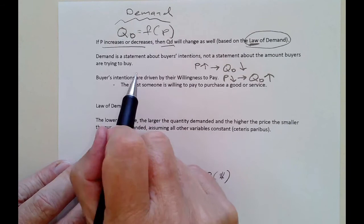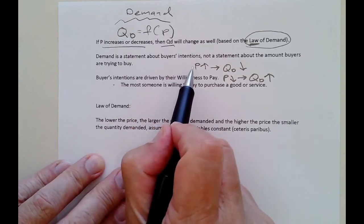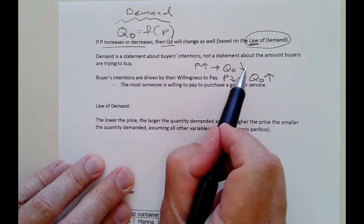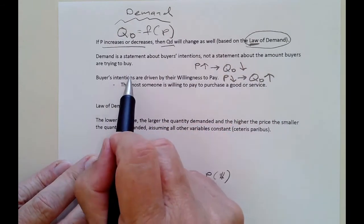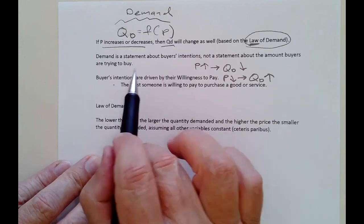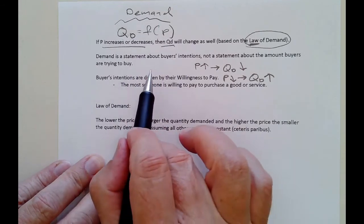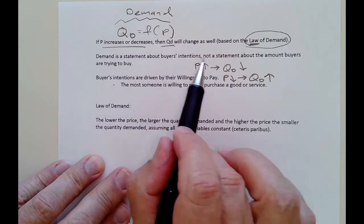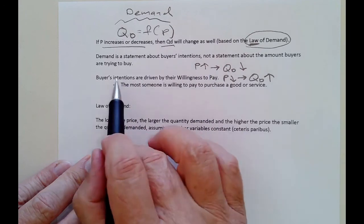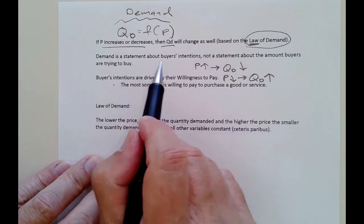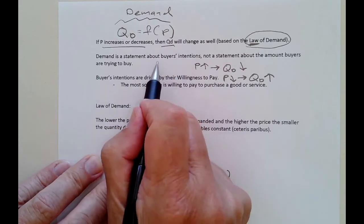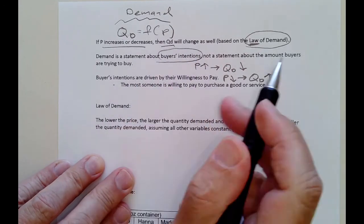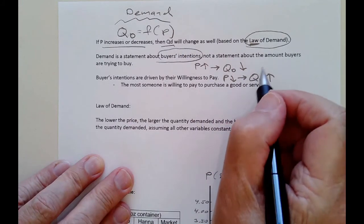The law of demand is a statement about buyers' intentions — not a statement about the actual amount consumers are buying. It's a statement of: at this price, what would consumers do? At this other price, what would consumers do? So it covers all the possible buyer intentions. The actual amount being bought is the quantity demanded.